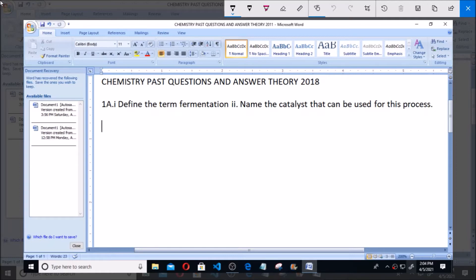O6 aqueous, that is glucose, giving 2 moles of ethanol: 2 C2H5OH in aqueous form, plus 2 CO2, that is 2 moles of carbon dioxide in gaseous state.